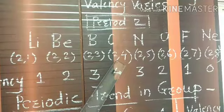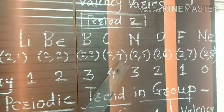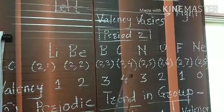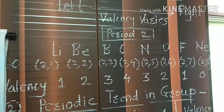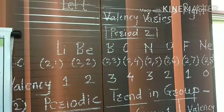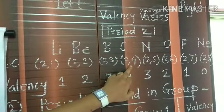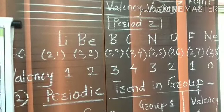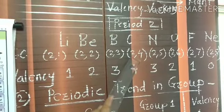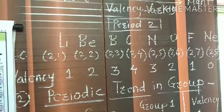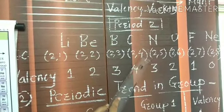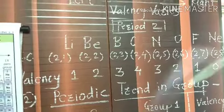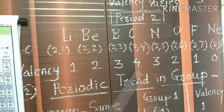The electronic configuration of carbon is 2,4, meaning there are 4 electrons in the last orbit. Carbon can either donate 4 electrons to another element or gain 4 electrons from another element to complete its octet. So the valency of carbon is 4.